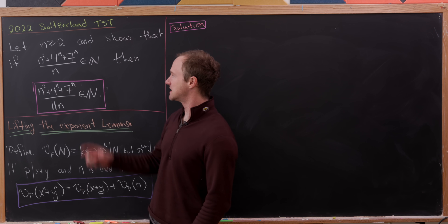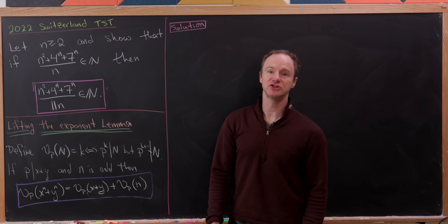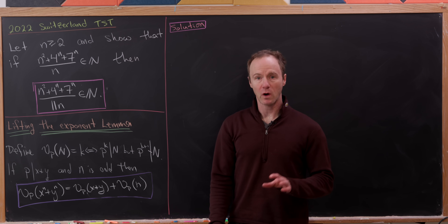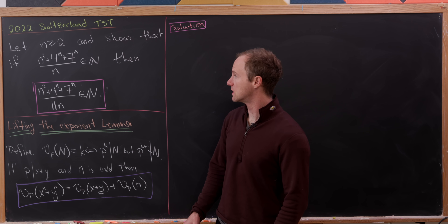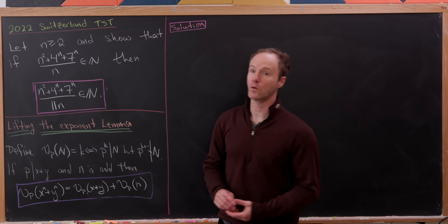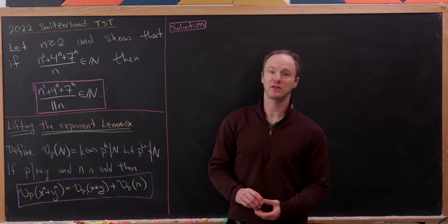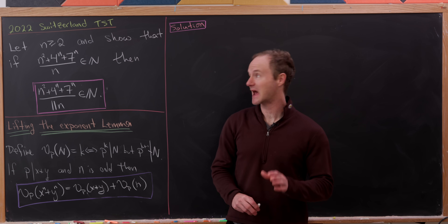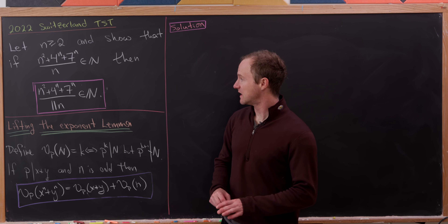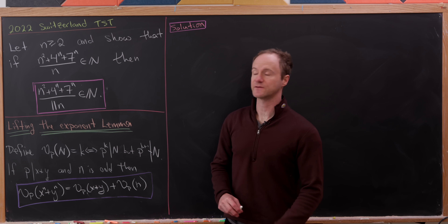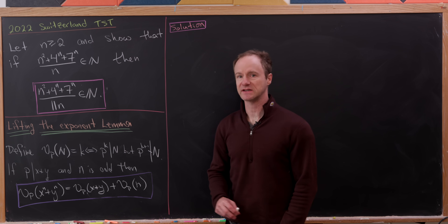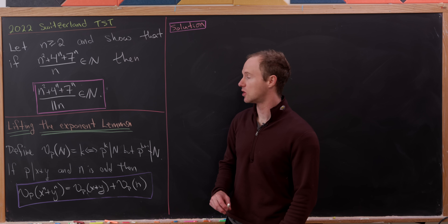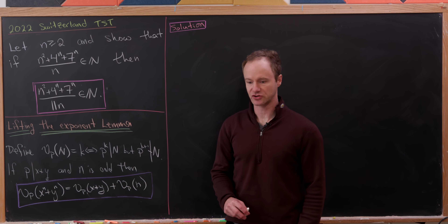So let's say that n is an integer which is bigger than or equal to 2. What we'll do is show that if (n² + 4ⁿ + 7ⁿ)/n is a natural number, then (n² + 4ⁿ + 7ⁿ)/(11n) is also a natural number.